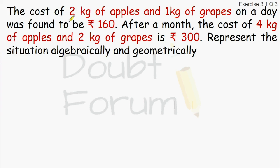The next question: the cost of 2 kg of apples and 1 kg of grapes was found to be Rs. 160. After a month, the cost of 4 kg of apples and 2 kg of grapes is Rs. 300. So in the first case the price of 2 kg of apples and 1 kg of grapes is given, and in the second case the cost of 4 kg of apples and 2 kg of grapes is given.